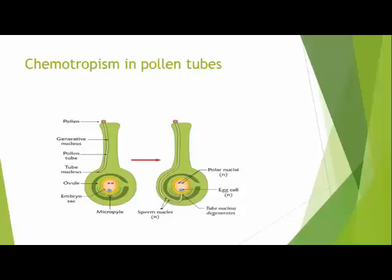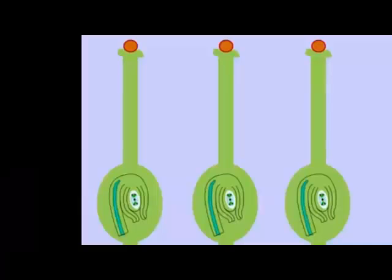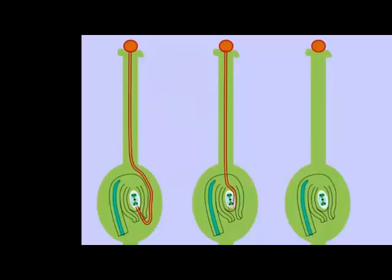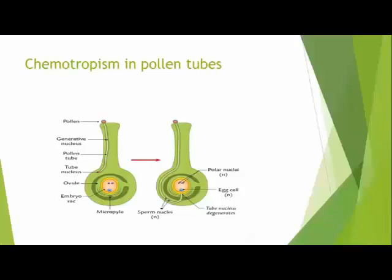Chemotropism in pollen tubes. Positive chemotropism can be demonstrated by the process of fertilization in flowering plants. On landing on the stigma, the pollen grain germinates to form a pollen tube with male nuclei. The pollen tube grows towards the egg cell by the chemical substance secreted by the egg cell. This process makes fertilization possible in these plants.